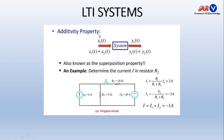If we combine both signals x1(t) and x2(t), that is x1(t) + x2(t), it must produce the sum of the outputs y1(t) + y2(t). Any system that follows this property is also a linear system. It is also known as the superposition property.